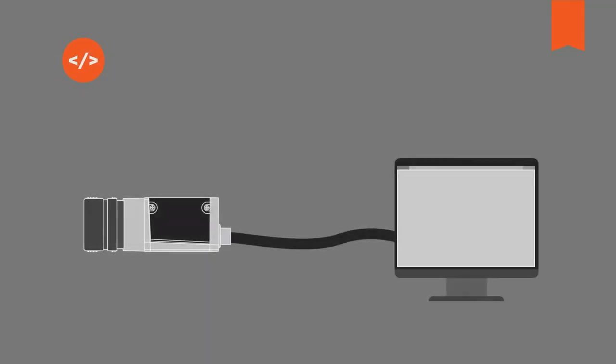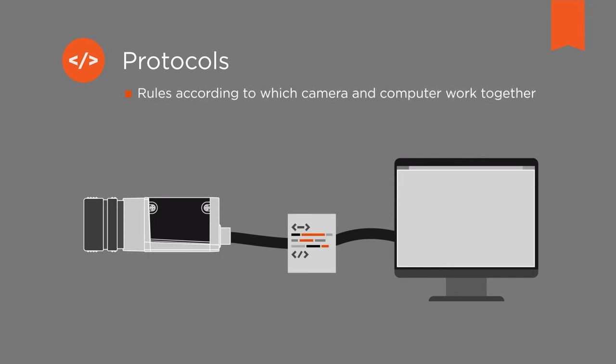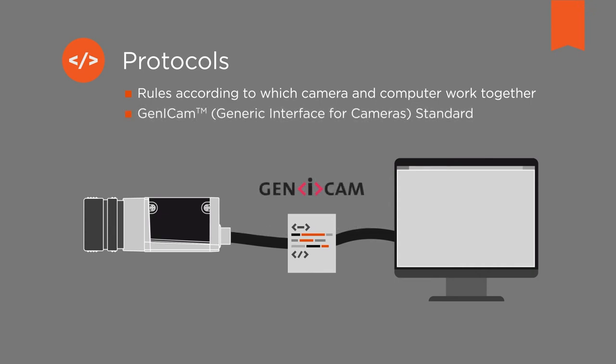Transmitting image data from the camera to the image processing computer quickly and reliably is not a trivial task. Here too, software components play an important role by implementing the rules, also known as protocols, according to which the camera and the computer work together. A well-known standard for such protocols is Genicam.